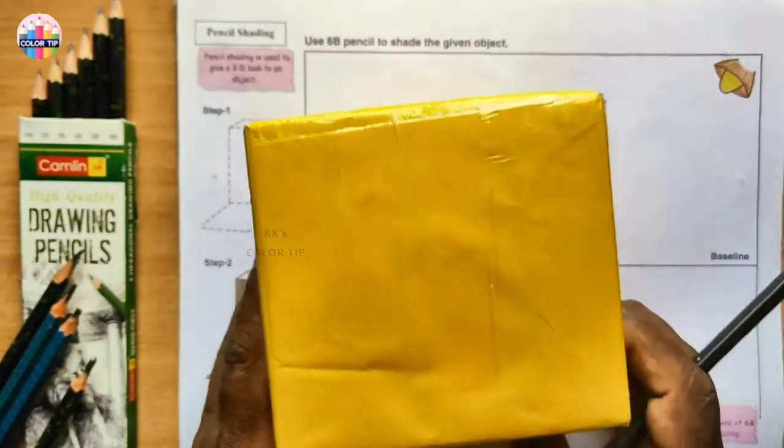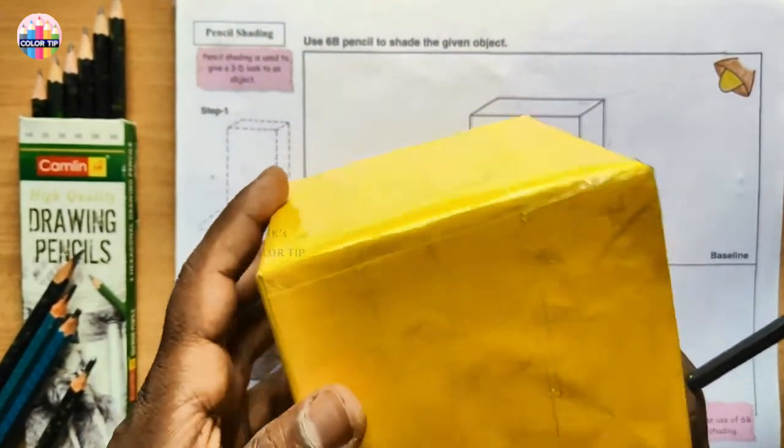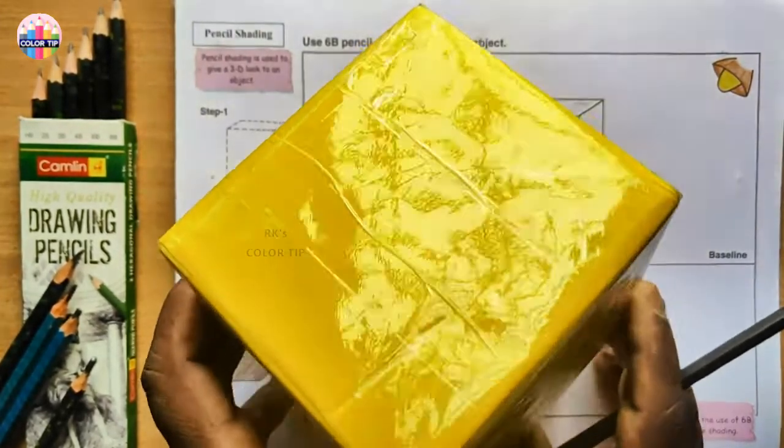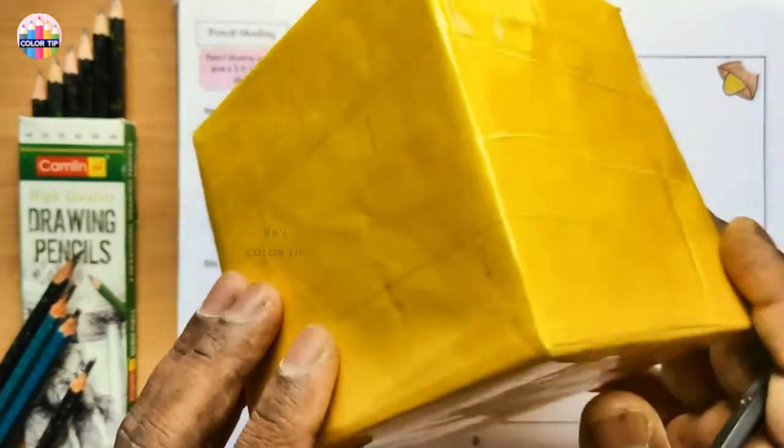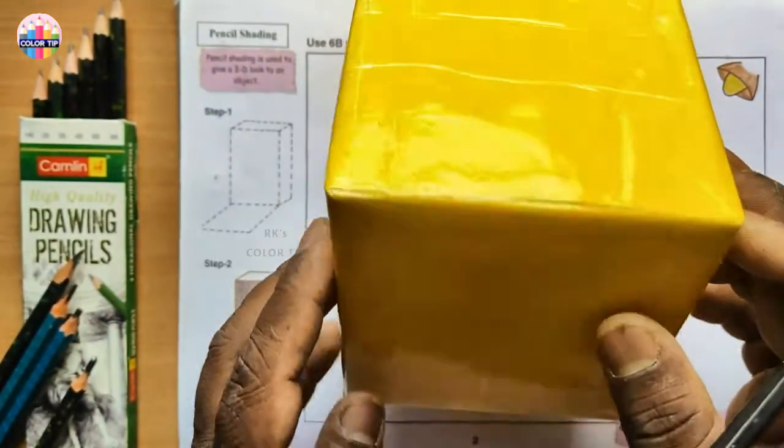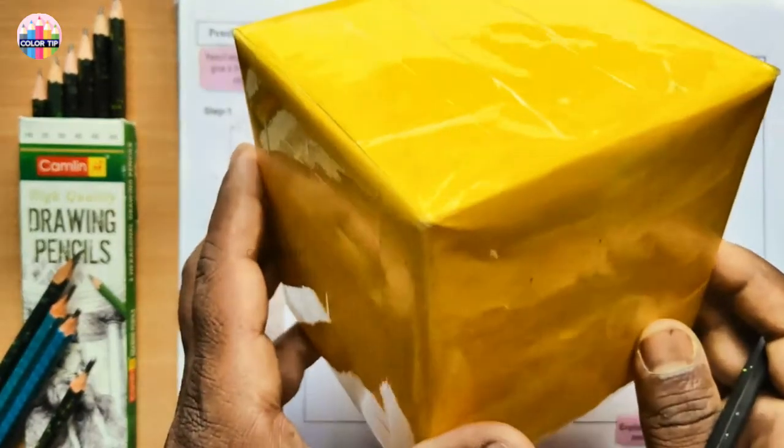So we have to observe how the light source is reaching on the object and how the shades are forming. Whether it's a bright light or dark, everything needs to be observed to do well with our drawing.